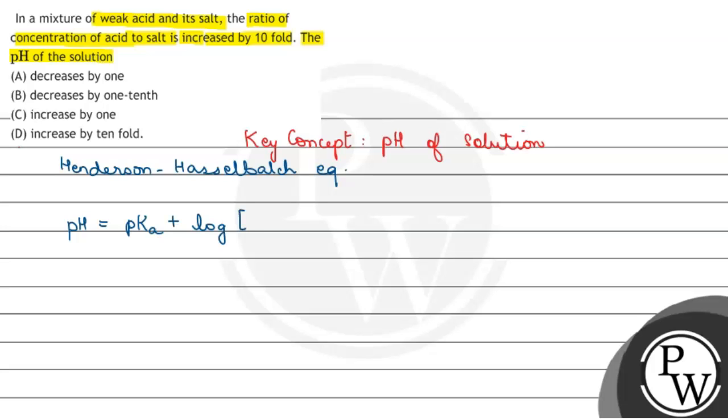Concentration of salt upon concentration of acid. So this is Henderson-Hasselbalch equation which relates pH to the concentration of salt and acid. Okay, so we can use this equation.